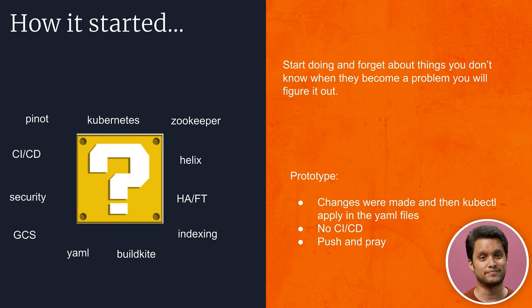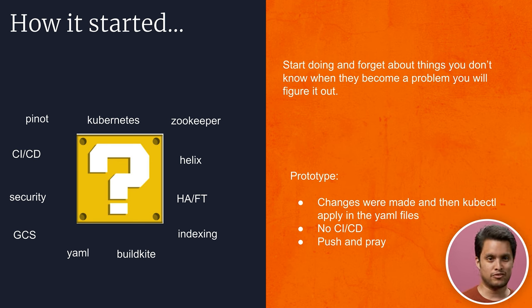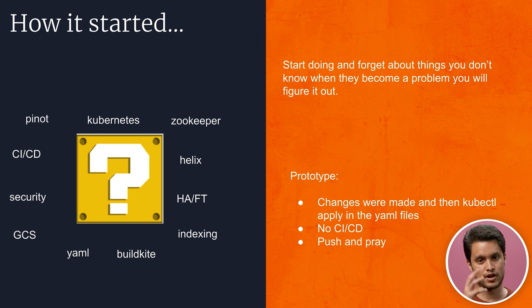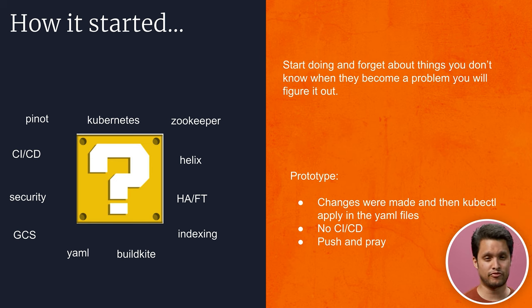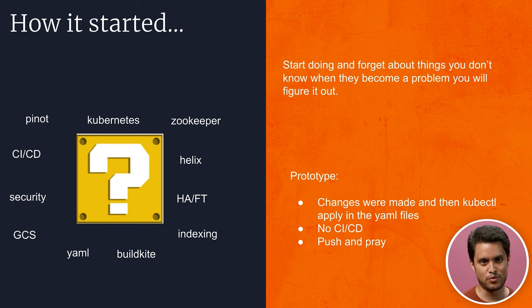How it started: we had this cool new product, Pinot, but how do we implement it? You have all these technologies — Pinot, Kubernetes, Zookeeper, CI/CD, Helix — and our team was not suited to do all of these things. So for a proof of concept, we pulled the Helm chart from the Pinot repo, made YAML files out of that, and did kubectl apply for all the changes. There was no CI/CD — it was push and pray. This served us well for a prototype that wasn't in production and helped us see Pinot's capabilities, but it was definitely not something we wanted in production.